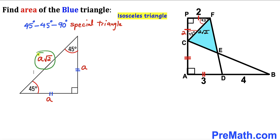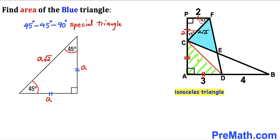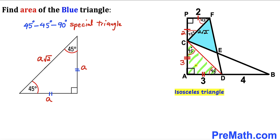In the next step, I have connected point C with point D, giving us right triangle CAD. This is also an isosceles triangle since AD equals AC. So if AD is 3, then AC is 3 units as well. This is also a 45-45-90 special triangle, so the hypotenuse CD turns out to be 3 times square root of 2.